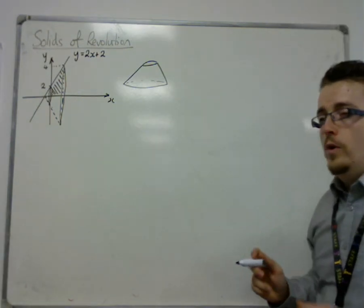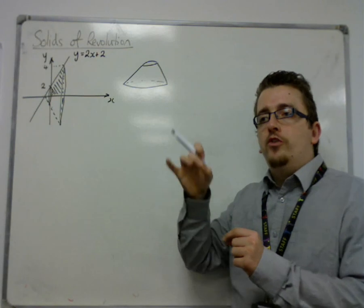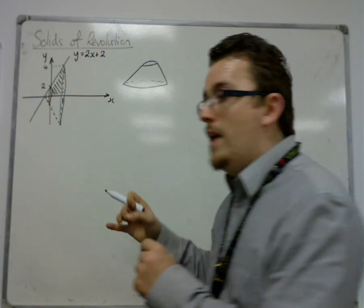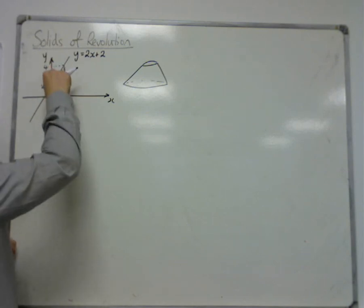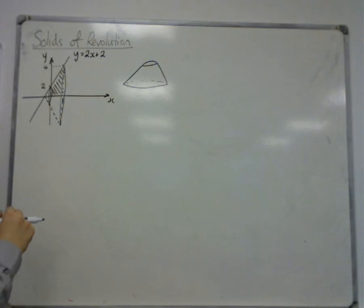So, in other words, the radius of each of those circles depends on where we are. And the radius at each value of x is given by y.